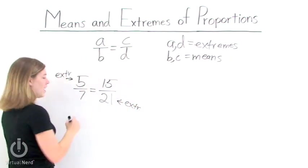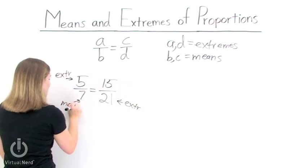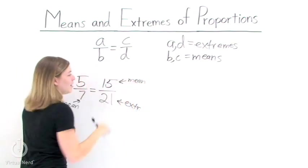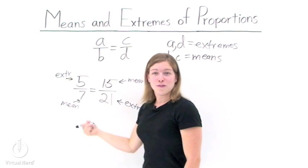The means are the same way. 7 is a mean, and 15 is a mean. Now we've picked out the means and extremes for this proportion.